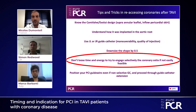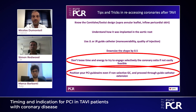The most important advice for PCI after TAVI: don't waste time and energy trying to selectively engage the coronary ostium if it's not easily feasible. Simply position your guiding catheter in front of the ostium, advance your wire into the coronary artery, and then advance a guiding catheter extension over the wire. This gives you all the support necessary to perform your PCI, even if it's complex.